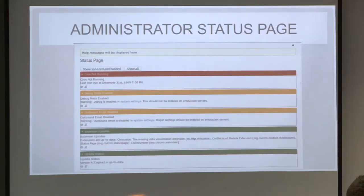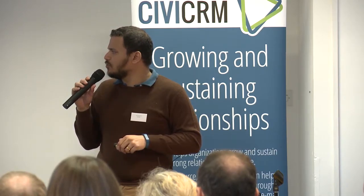We also decided to add a status page, where commonly-used system statuses are displayed. For example, it gives you a message saying cron is not running, debug is enabled, or outbound email is disabled. It is API-driven, so if you are developing an extension, you can plug your extension parameters into it and they will automatically display there. It's a nice status page, just like some CMSs have, where you look at it and make sure everything is green.